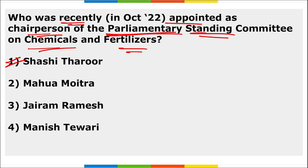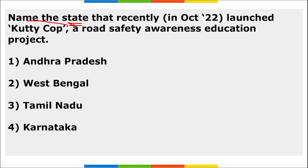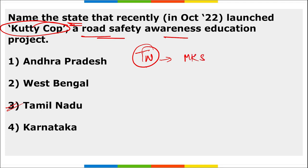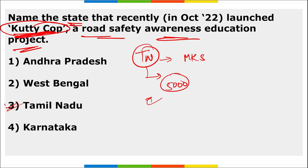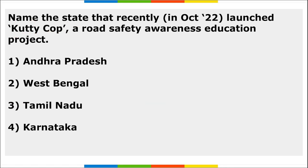Tamil Nadu launched KutiCop, a road safety awareness education project, by Chief Minister MK Stalin. Tamil Nadu also launched a breakfast scheme for pre-primary students of government schools. Nearly 5,000 students took the pledge at Co-optex Trade Fair Complex, while the remaining 4.5 lakh students took it at their schools. That concludes today's current affairs session.